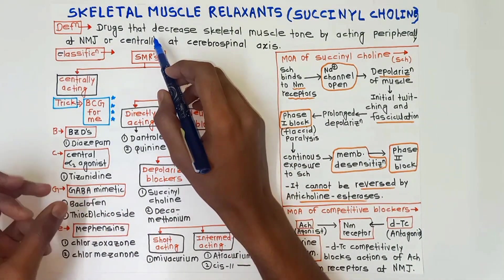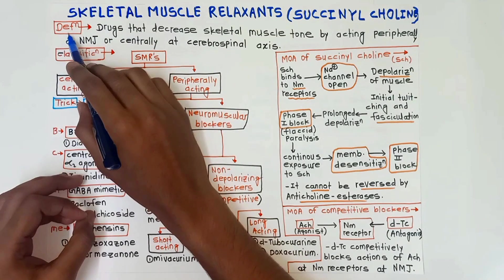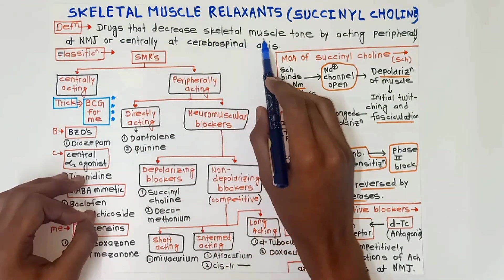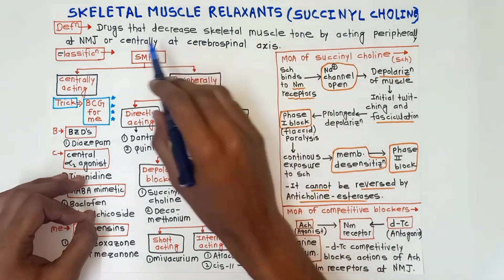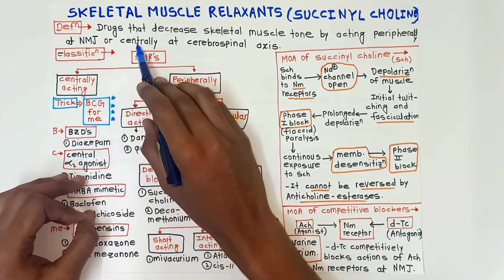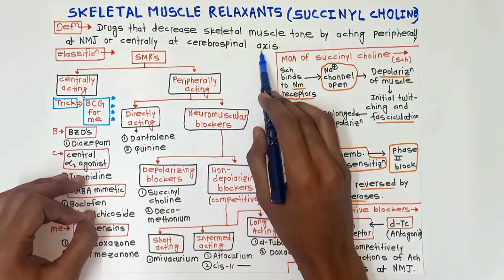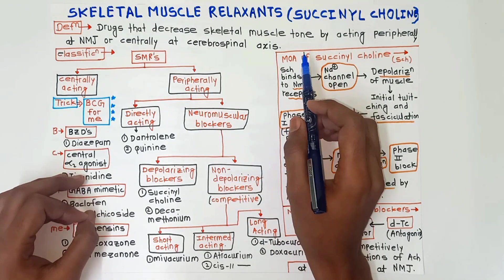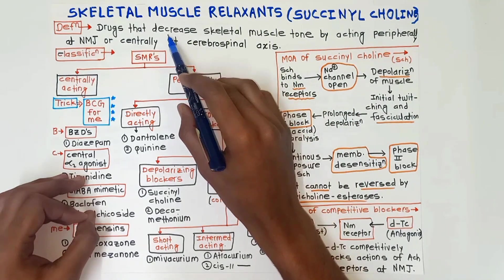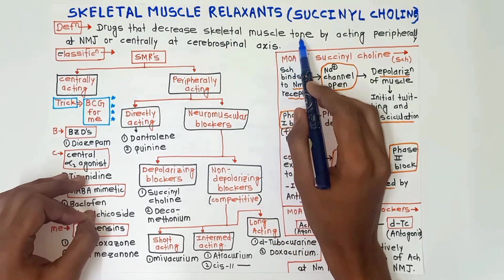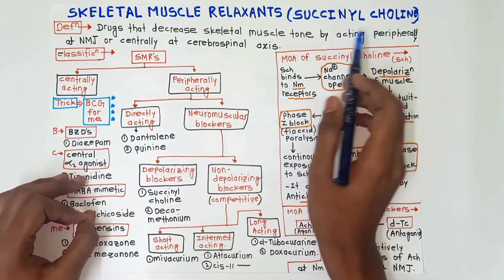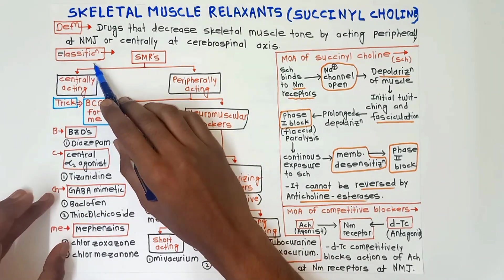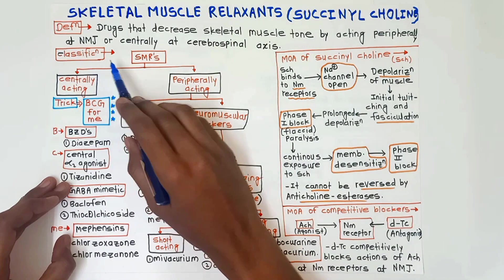First, the definition: drugs that decrease skeletal muscle tone by acting peripherally at the neuromuscular junction and centrally at the cerebrospinal axis are called skeletal muscle relaxants. Basically, they decrease skeletal muscle tone by acting both peripherally and centrally.